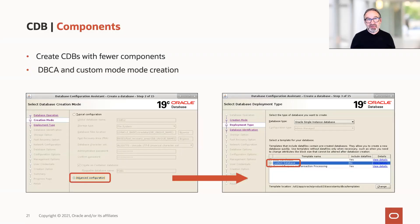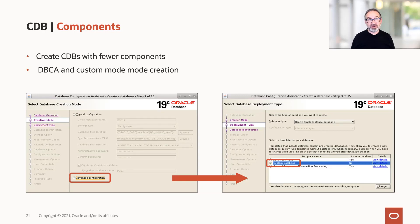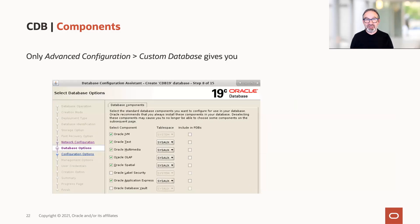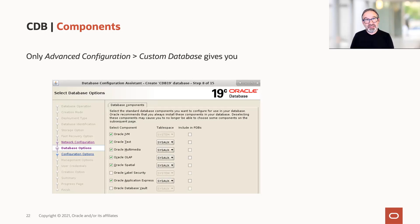When you create your database in DBCA, we would strongly recommend that you take the advanced configuration button. Don't go the easy route — click advanced configuration and then custom database. Because this route is the only way you will see the screen where you can choose which options you'd like to install. And at the end, create a template from this and reuse that template — it will always do the same.